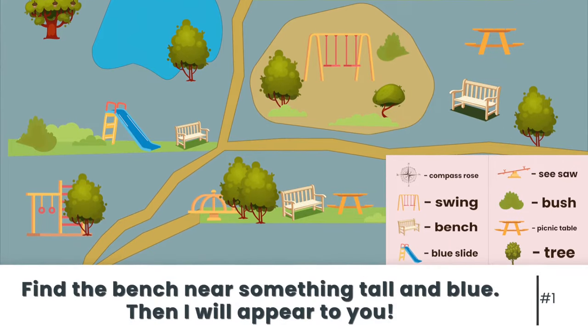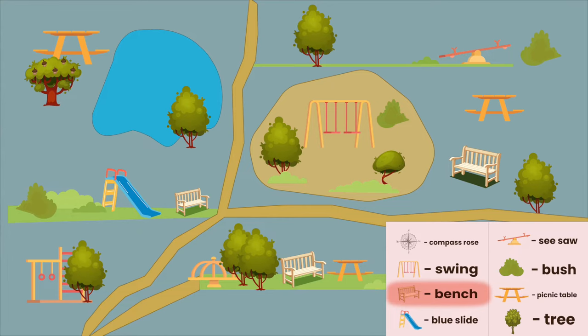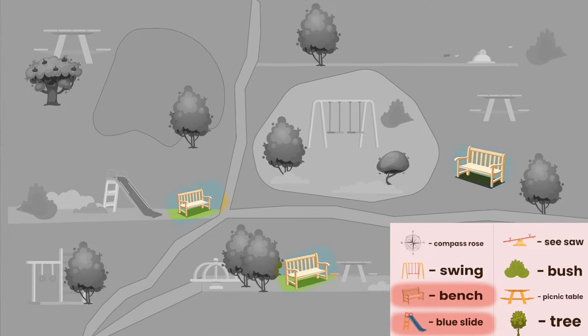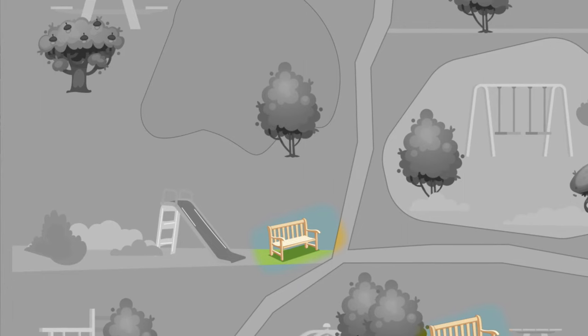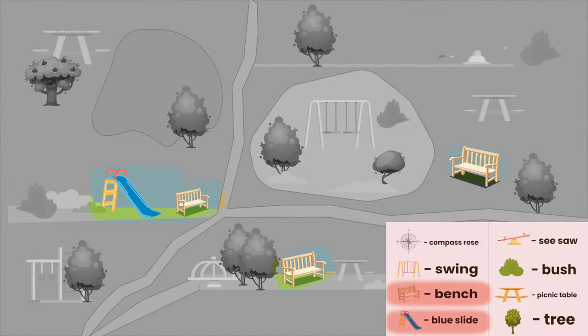All right, here's our first clue. Find the bench near something tall and blue. Then I will appear to you. Okay, let's look for a bench in our map key and something tall and blue. Oh, here's one. A slide. Okay, now let's find benches on our map. Clap loudly to let me know when we find one that's near something tall and blue. Oh, wait. Thank you. I almost missed it. Good job. This bench is next to something tall and blue. It's a slide. Now, that means our puppy is hiding somewhere around here. There's puppy number one. Great job.